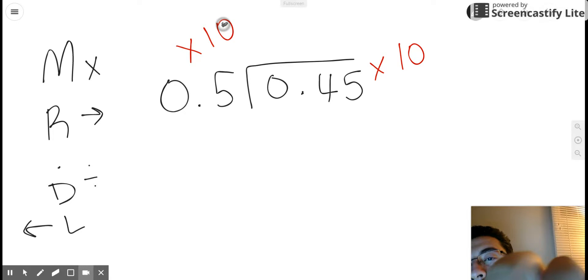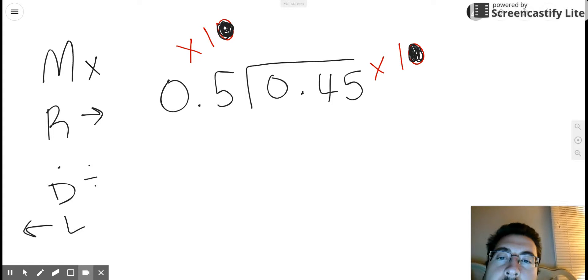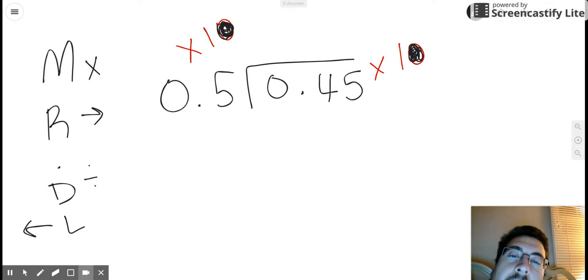And because we only have one zero—you see I'm coloring them in with the number 10—that signifies we have one power of 10, so we're going to move our decimal point one place to the right.